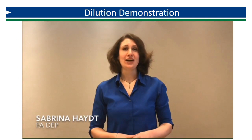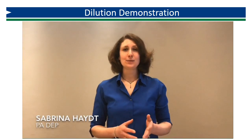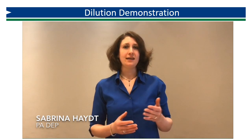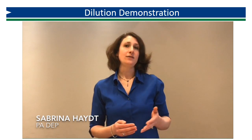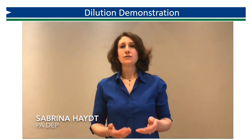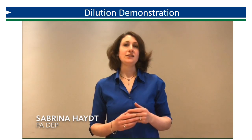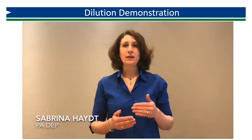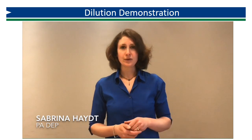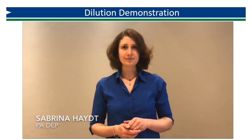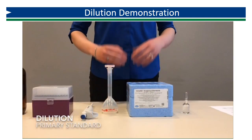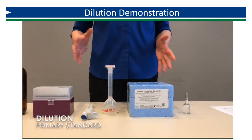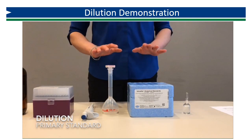In this video, I'm going to show you how to calculate and prepare a diluted chlorine primary standard. This standard can then be used for either your initial or your routine quarterly verifications that are required under the grab sample method within EPA Method 334.0. Before I begin my dilution, I want to make sure that I have everything I need, so I'm going to go through and review all of my supplies.